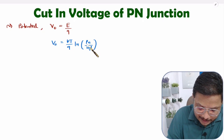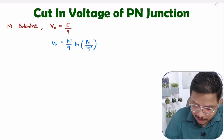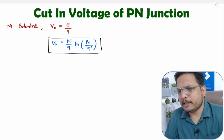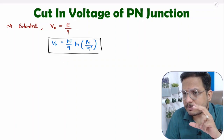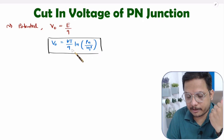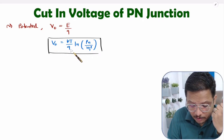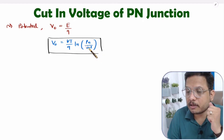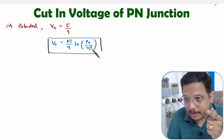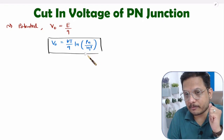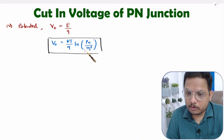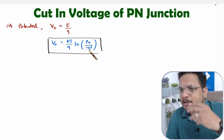So V0 = (KT/Q) · ln(PN / Ni²), where P is holes concentration in P-type, N is electron concentration in N-type, and Ni is intrinsic concentration. I am going to derive this potential in multiple ways, because in examinations you need to be able to solve problems even when data is not given in this exact form.